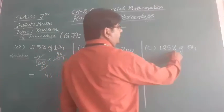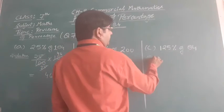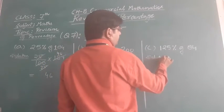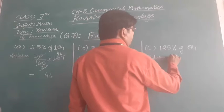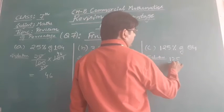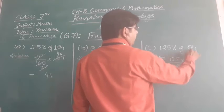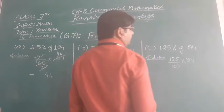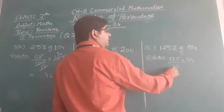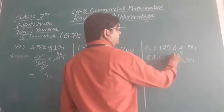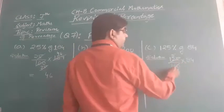Next, 125% of 84. So 125 upon 100 multiplied by 84. Now, dividing 125 and 100 by 25. 25 into 5 is 125 and 25 into 4 is 100.